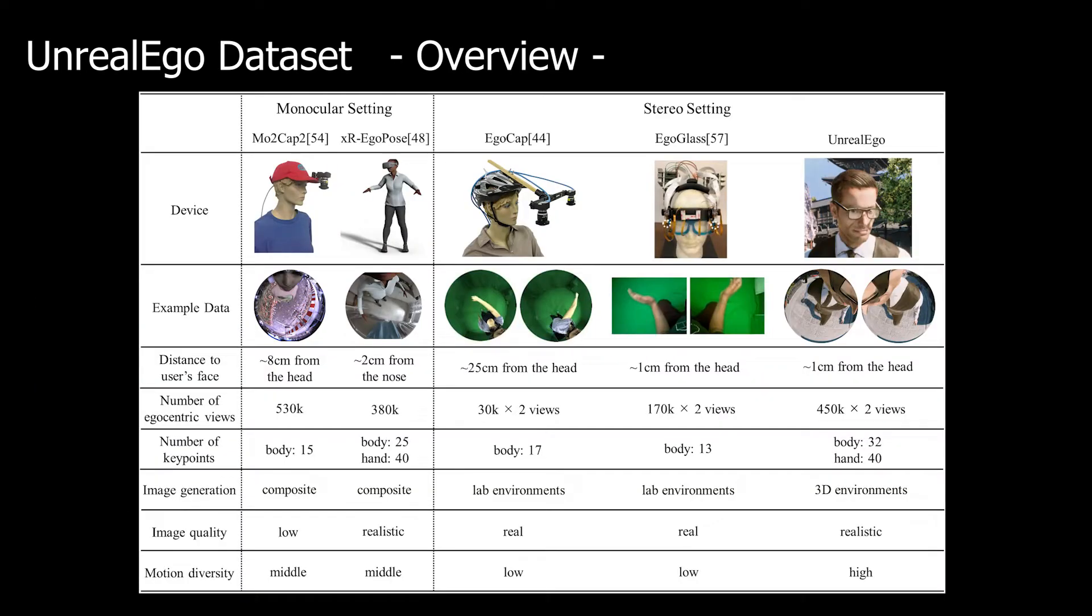We summarize the key differences between existing datasets and UnrealEgo. We propose a compact eyeglasses-based setup for in-the-wild stereo view capture. Similar to EgoGlass, our cameras are placed closer to the head. UnrealEgo contains the largest number of egocentric images, 900,000 images in total. Also, UnrealEgo provides the largest number of keypoints among existing datasets.